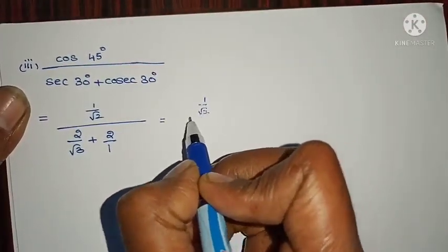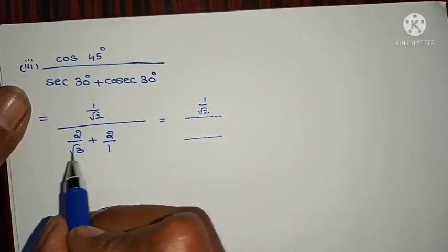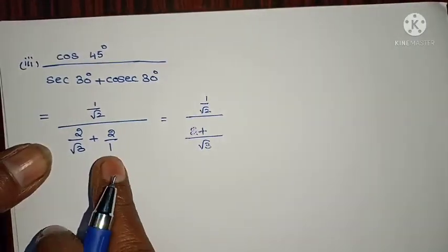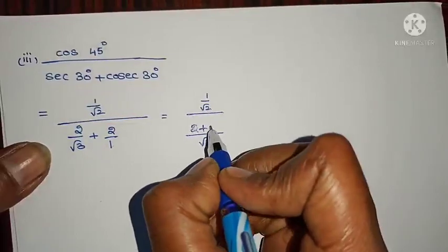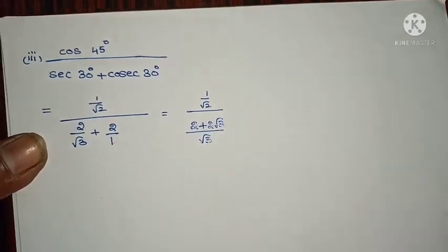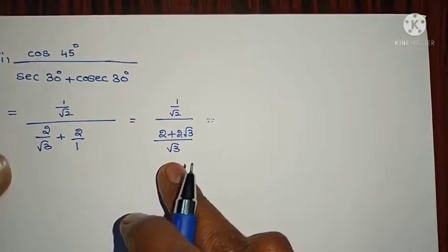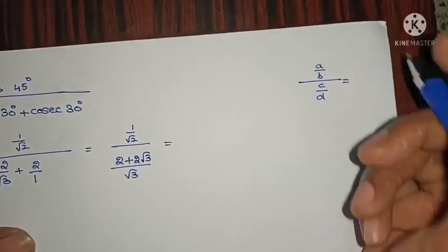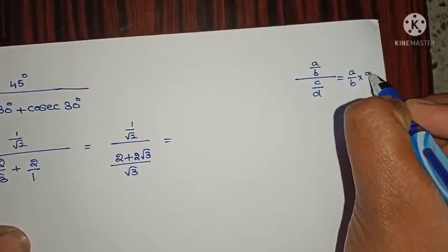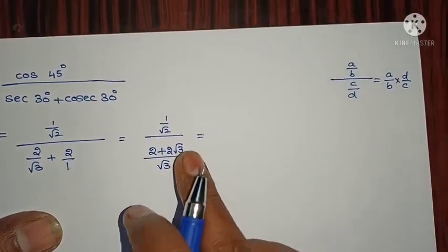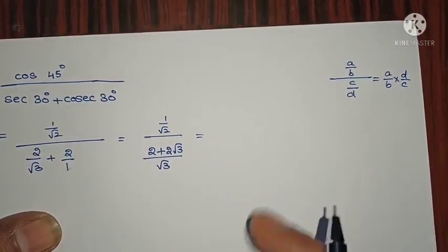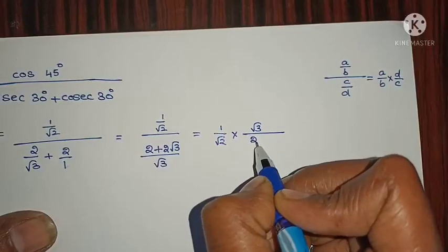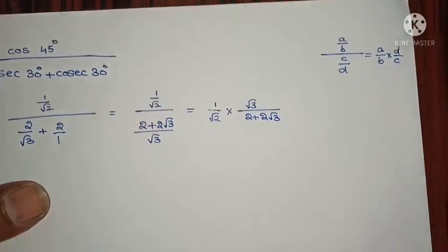So we have 1/√2 divided by (2/√3 + 2/1). Taking LCM of √3 and 1, which is √3: 2 + 2√3 over √3. This is in the form A/B ÷ C/D, so it becomes A/B × D/C, giving 1/√2 × √3/(2 + 2√3).